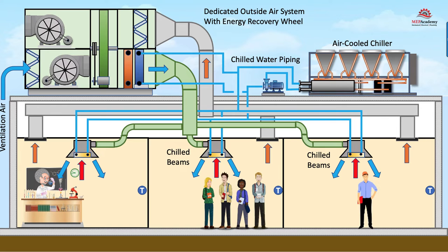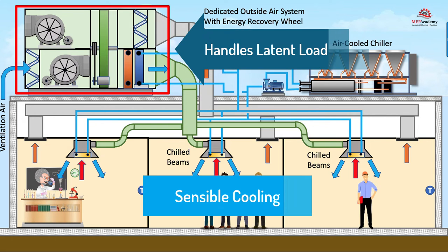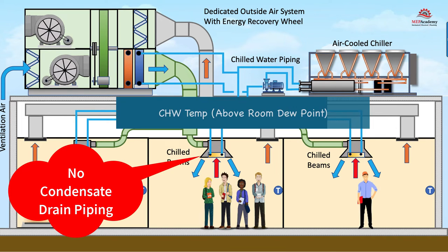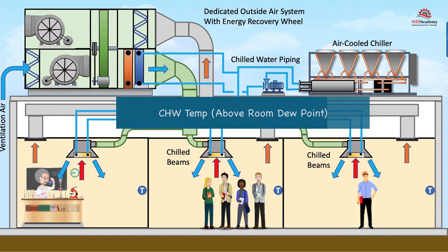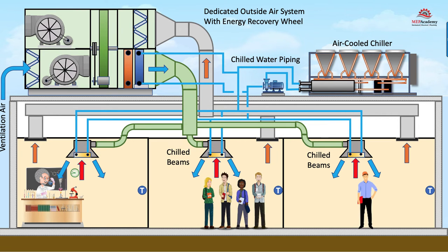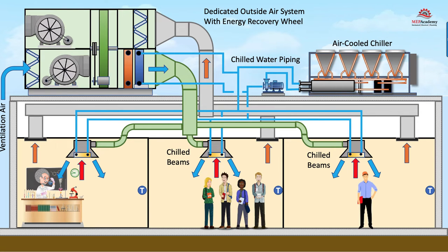The chilled beams are designed to handle sensible load, while leaving ventilation and latent load requirements to the main DOAS or AHU. This eliminates the need for condensate drain piping at each chilled beam, as the coil temperature will be maintained above the dew point temperature. The AHU unit can be sized just to handle the ventilation requirements, allowing for a smaller than normal unit. However, it is imperative that the AHU be sized to handle the dehumidification requirements, as the chilled beams handle strictly sensible cooling. The primary air must be dry enough to handle any space latent load while maintaining the indoor dew point low enough to prevent condensation on the chilled beam coil.